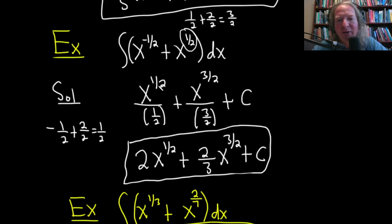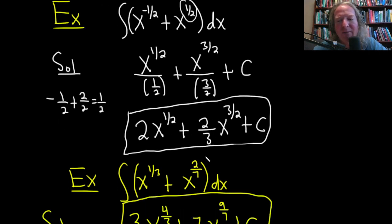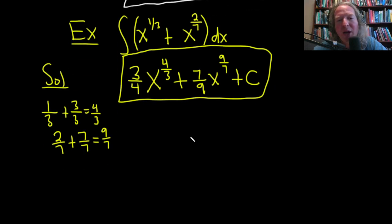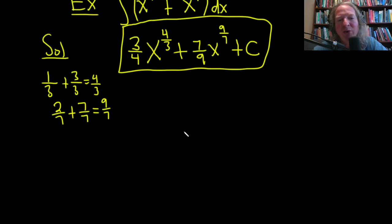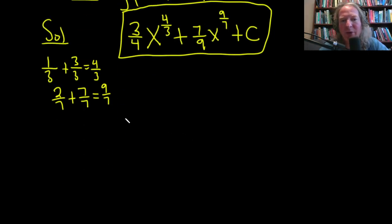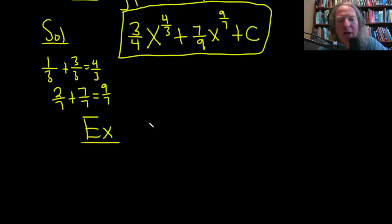Whether you're comfortable skipping the intermediate division step is a personal choice. You can always show dividing by 1/2, then flipping to multiply by the reciprocal — it's up to you how many steps you show. Let's do another one — something a bit simpler: 1 over x cubed.